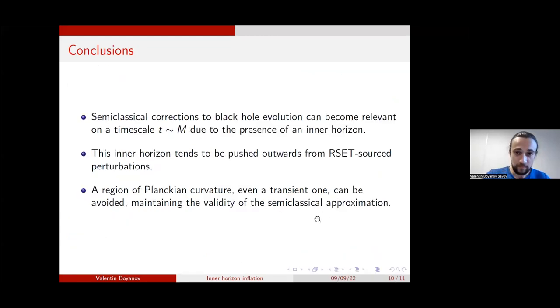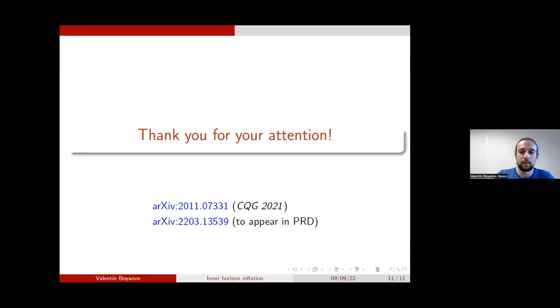So to summarize, semi-classical corrections to the evolution of black holes can indeed become relevant on time scales which are linear in the mass, due to the presence of the inner horizon. And the effect this has is that the inner horizon tends to be pushed outwards. And this makes it so region of Planckian curvature may never be formed, and this in turn can guarantee the validity of semi-classical approximation used to obtain the result. That's all. Thank you.